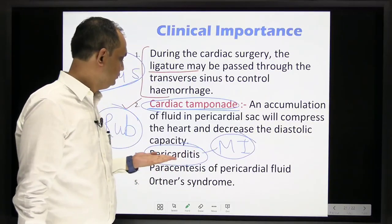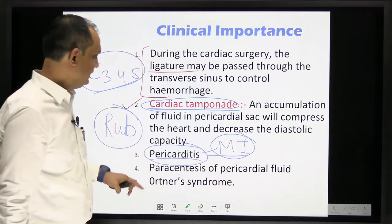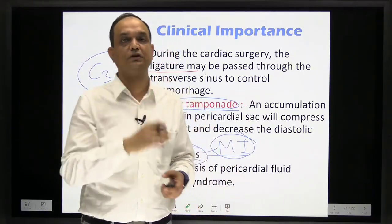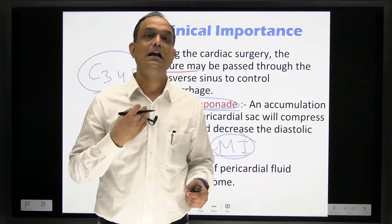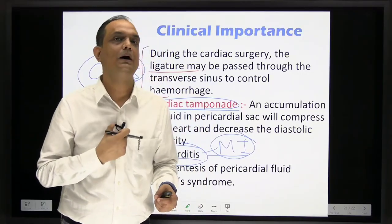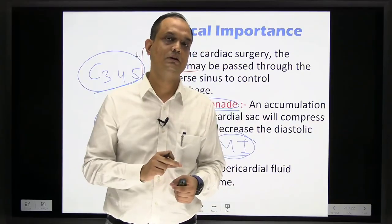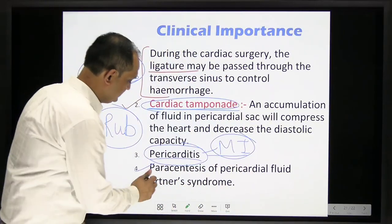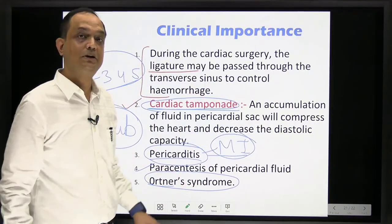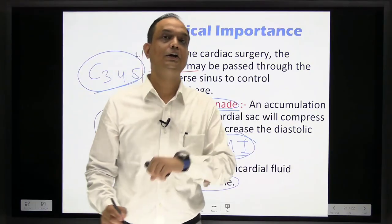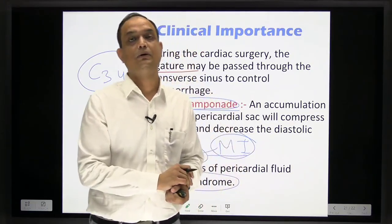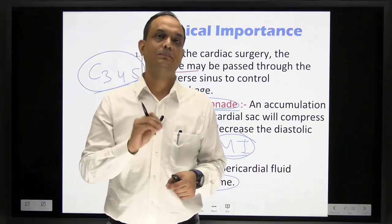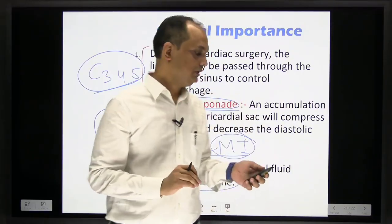Paracentesis means aspiration of pericardial fluid. The site is the left fifth intercostal space adjacent to the margin of the sternum, where a needle is inserted to enter the pericardial cavity. Finally, Ortner's syndrome (also called cardiovocal syndrome) is compression of the esophagus by an enlarged left atrium. In left atrial hypertrophy, the posterior structures in the posterior mediastinum — mainly the esophagus — are compressed, causing dysphagia.